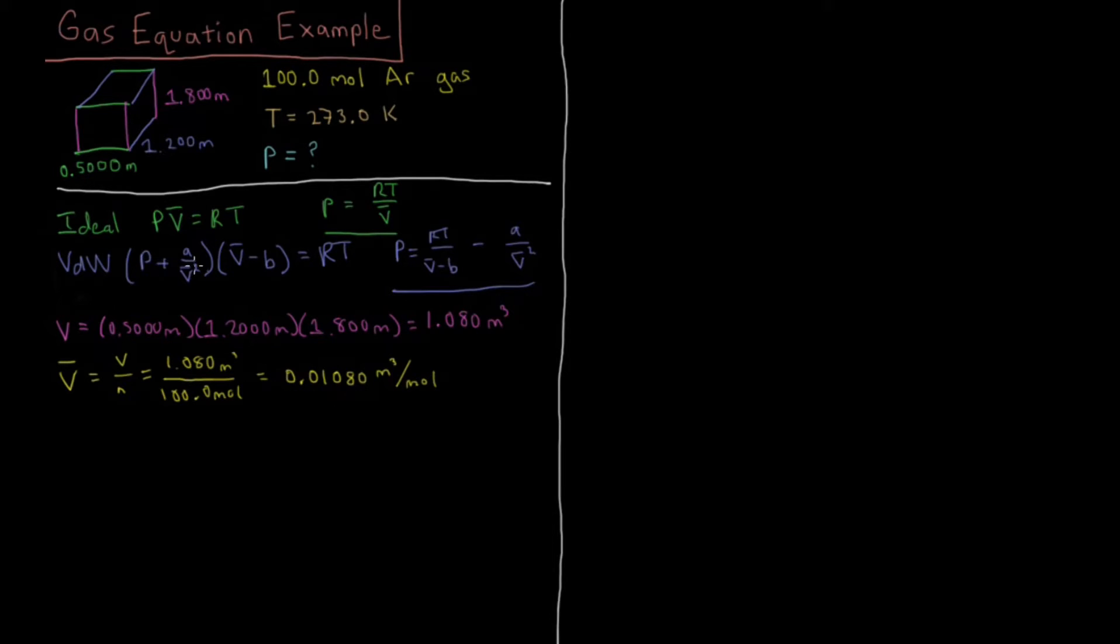For the Van der Waals equation of state, we're also going to need to look up in a table what the values of the A and B parameters are. Those depend on what the gas molecule is. The ideal gas equation doesn't care what gas you have, but Van der Waals does. These two parameters only depend on the identity of the gas.